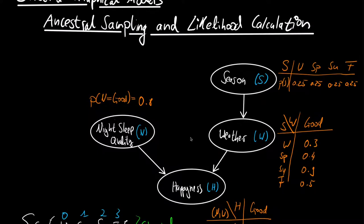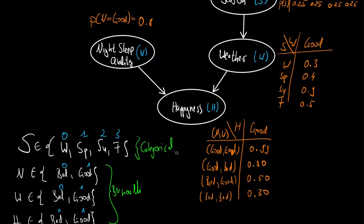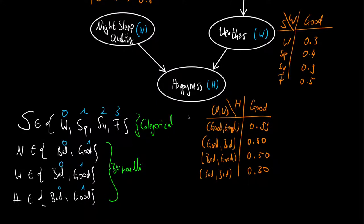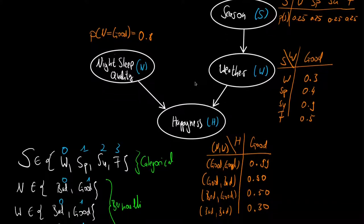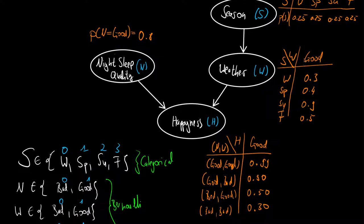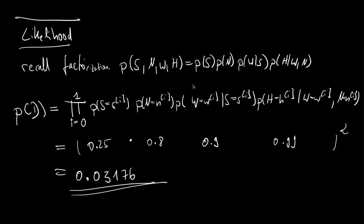To recap: we started with a directed graphical model, then associated states to the different random variables to determine what kind of distributions they are. We set up the parameters of the distributions — especially for nodes with incoming arrows, we must save multiple parameters since they depend on the drawn value of their ancestor node. Then we drew two samples and calculated their likelihood by plugging them into the factorization of the joint distribution.